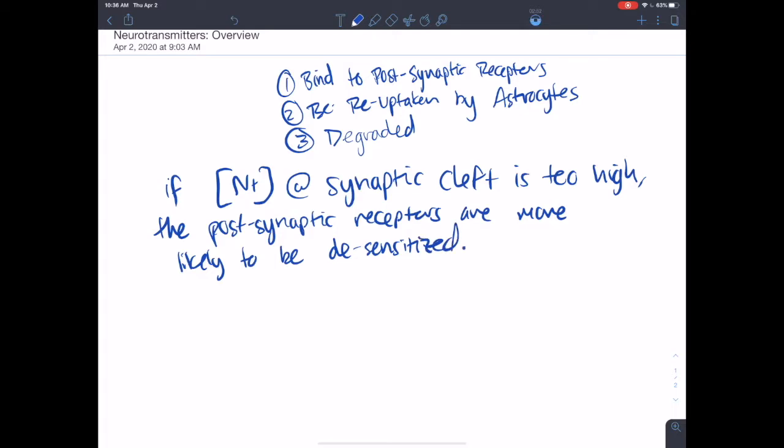So when a neurotransmitter binds to a post-synaptic receptor, it doesn't just bind and then stay there. It binds for a little bit, has its effect, but then it kind of pops off. And we know that each neurotransmitter receptor usually requires at least two neurotransmitters to bind. Even glutamate receptors can sometimes bind up to four neurotransmitters.